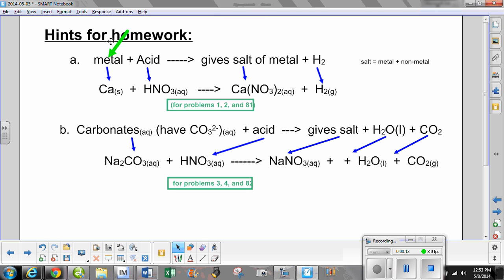When I say metal here, it could be any metal and this is the first reaction type and it applies to your problems 1, 2 and 81. So metal, for example, calcium, and it will always show as an S or solid. The nitric acid is as good as any so I use nitric acid with calcium as a demonstration.